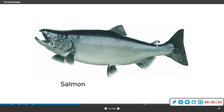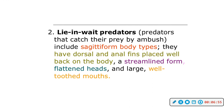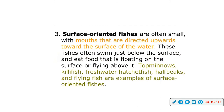Lunge or ambush predators typically have sagittiform body types. They have dorsal and anal fins placed well back on the body, a streamlined form, flattened heads, and large well-toothed mouths. Surface-oriented fish are often small with mouths directed upward towards the surface of the water — these are your top minnows, killifish, freshwater hatchetfish, halfbeaks, and flying fish.